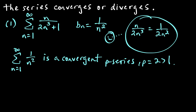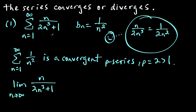What gives it away is looking at the leading terms — that gives a sense of whether the series converges or diverges. So now we actually have to do the limit, because if you're using the limit comparison test, you actually have to find a limit at some point. So we have n over 2n³ + 1 as our a_n term, and we're doing the limit as n goes to infinity of a_n divided by b_n.